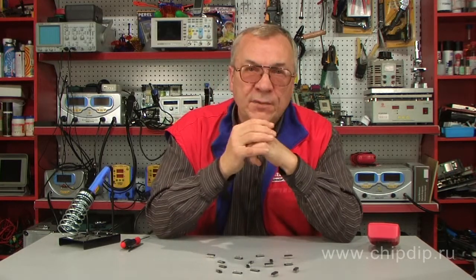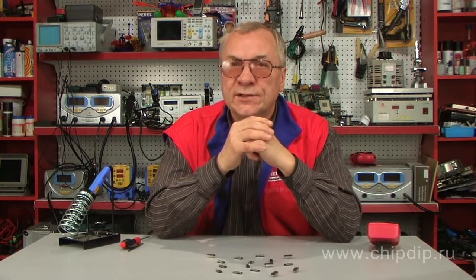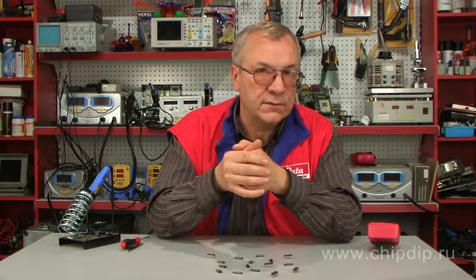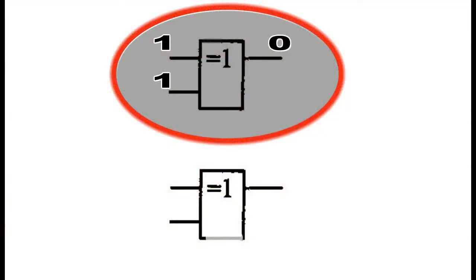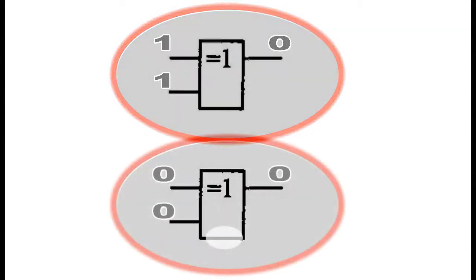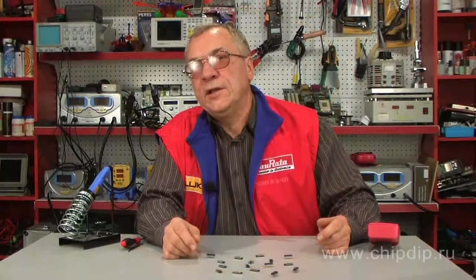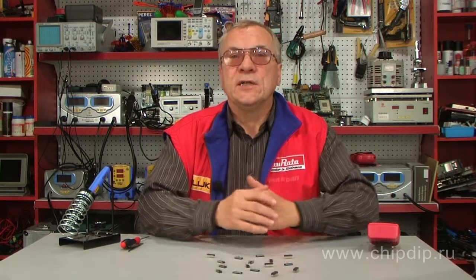General use of exclusive OR gates can be directly derived from the truth table. One application is comparison of two input signals: if both inputs return 1s or both return 0s — that is, the signals are matching — the output equals 0. The exclusive OR gate is also used as a two-input adder in parallel and serial devices intended for cyclic redundancy checksum calculation.